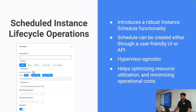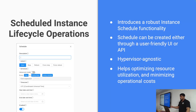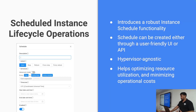We have been getting a lot of user requests about how they can start and stop their instances automatically. This new hypervisor-agnostic feature adds functionality for scheduling instance operations — you can schedule when your instance should be started, stopped, force-stopped, or rebooted. Similar to DRS, it helps optimize resources in an environment and can help lower operational costs.